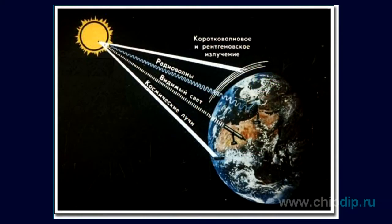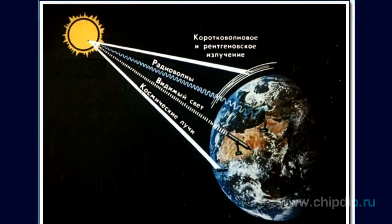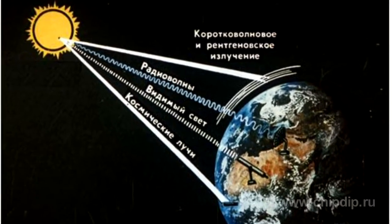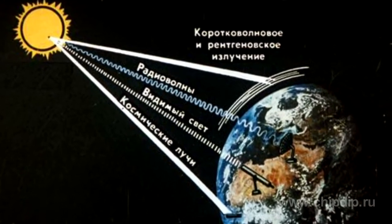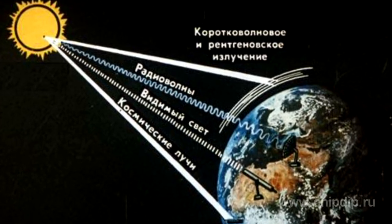The electromagnetic component of the solar radiation spreads at the speed of light and penetrates into our atmosphere. Solar radiation reaches the surface of the Earth as direct and diffuse radiation.